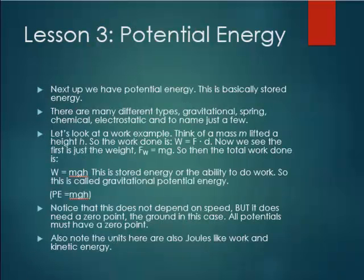Next up, we have potential energy. As the name states, this is basically stored energy. Now, unlike kinetic, there are many different types. There are gravitational, spring, chemical, electrostatic, magnetic, just to name a few. So let's look at a work example and see how this connects to a certain type of energy. Think of a mass m lifted a height h, so the work done is the force times the distance. Now we see that the first thing here, the force, is just the weight, or mg. So the total work done is mgh, and this is called the stored energy, or the ability to do work. So this is then the gravitational potential energy, or PE equals mgh.